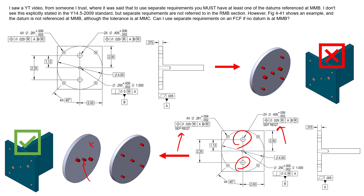There are many reasons to rely on simultaneous requirements or remove it with the separate requirements note, often because we haven't controlled a degree of freedom with our datum reference frame. Importantly, if the MMB modifier is applied to a feature control frame, that doesn't really change the interpretation of separate requirements. We could leave MMB off both instances and still have simultaneous requirements applied until we introduce separate requirements. So you don't need MMB applied to any datum if you have a degree of freedom that's open — separate requirements overriding simultaneous requirements still makes sense.